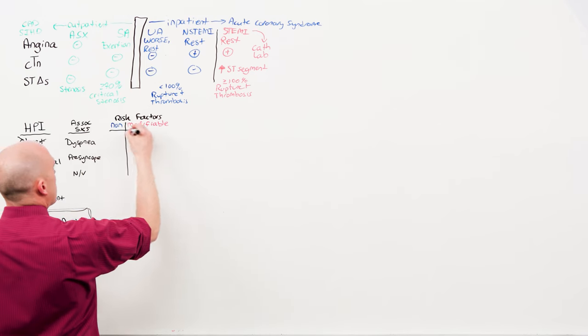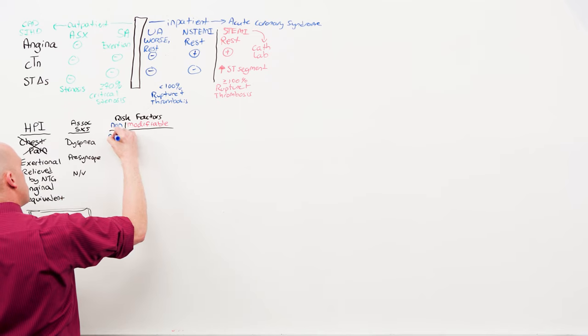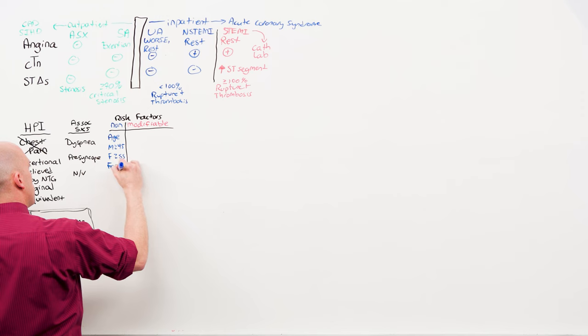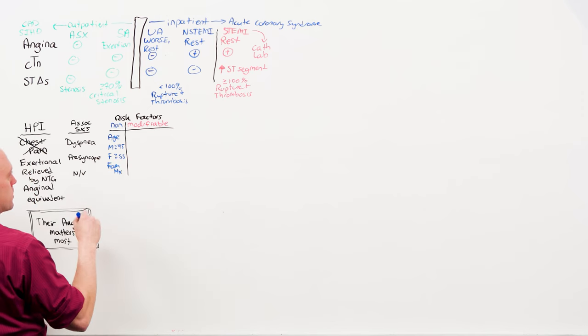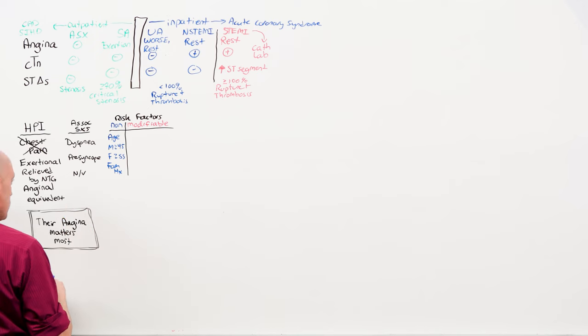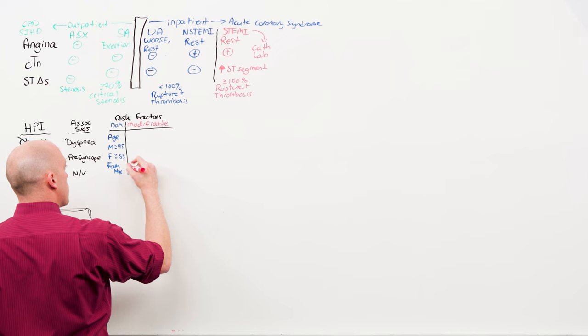The non-modifiable risk factors for atherosclerosis are age, males greater than or equal to 45, and in females the cutoff is 55, and family history, essentially encompassing genetics, early atherosclerosis for some reason. Of the modifiable risk factors, some matter more than others.